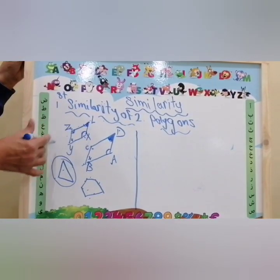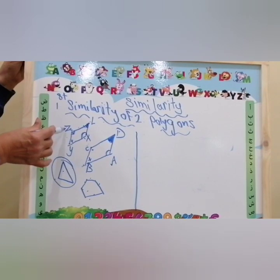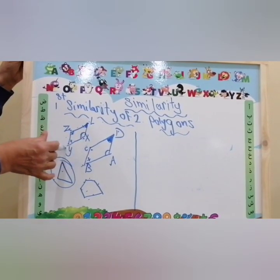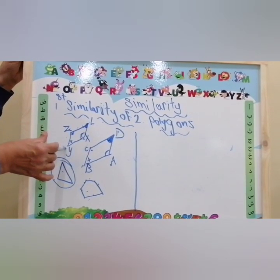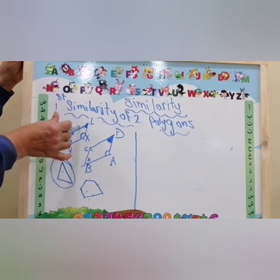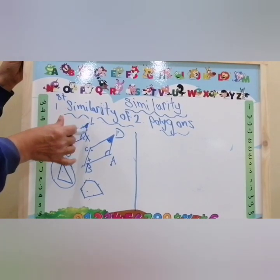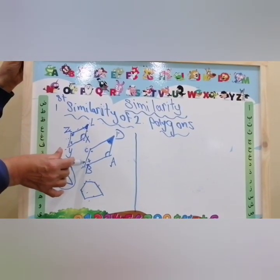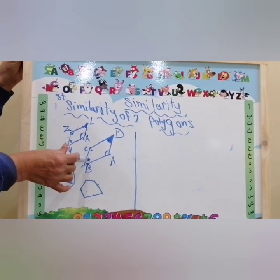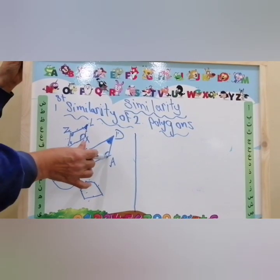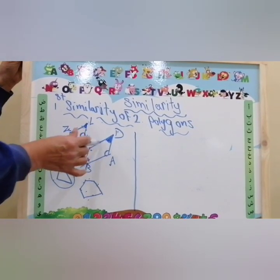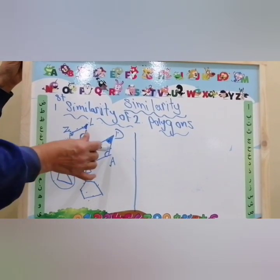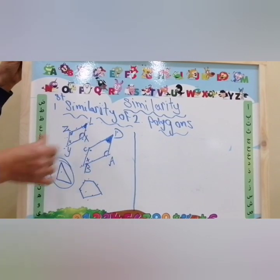How many vertices here? 1, 2, 3, 4. How many sides? 1, 2, 3, 4. How many vertices here? 1, 2, 3, 4. How many sides? 1, 2, 3, 4.